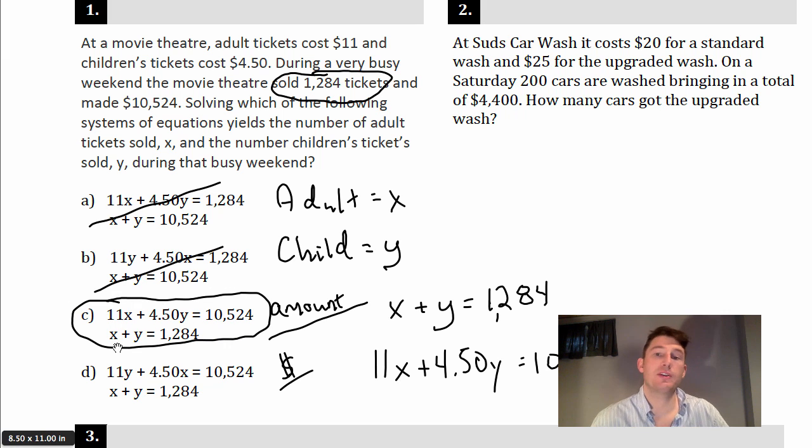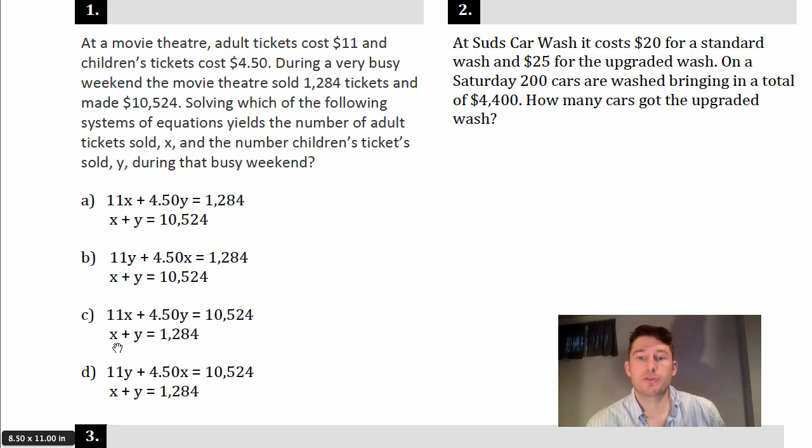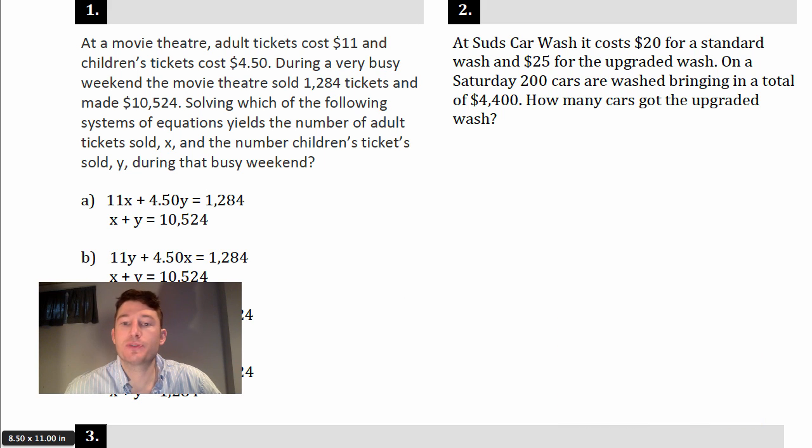So the easy ones just want you to recognize which two equations you can use to solve. Let's do one where you actually have to solve. Number two: at Suds Car Wash it costs $20 for a standard wash and $25 for the upgraded wash. On a Saturday, 200 cars are washed bringing in a total of $4,400. How many cars got the upgraded wash?